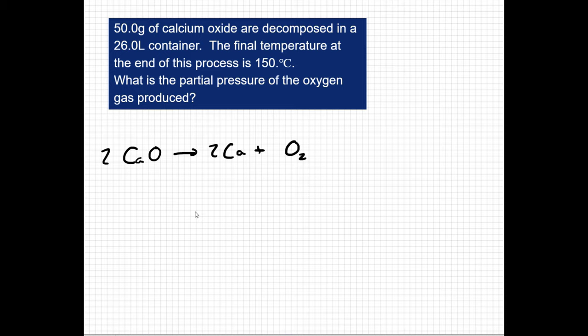Next thing I'm going to do is convert to moles. I'm told that I'm given 50 grams of calcium oxide. So if I have 50 grams of CaO, I know that one mole is equivalent to 56.1 grams. So I get 0.891 moles of CaO.